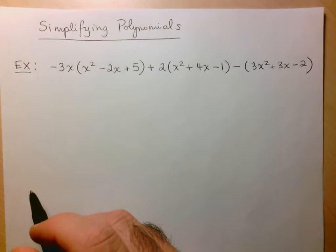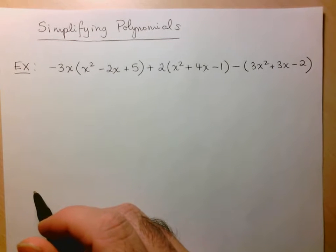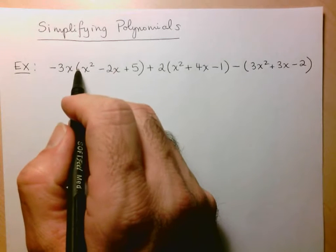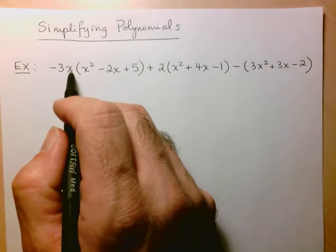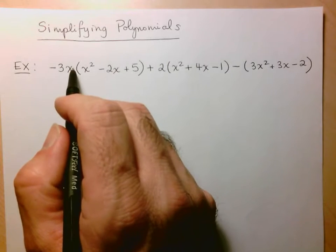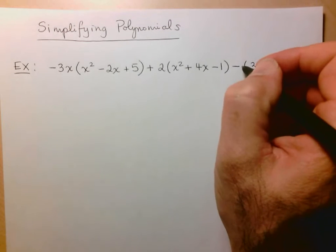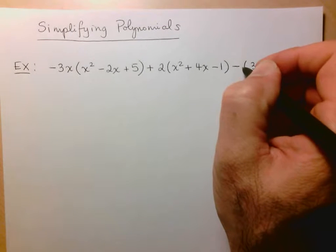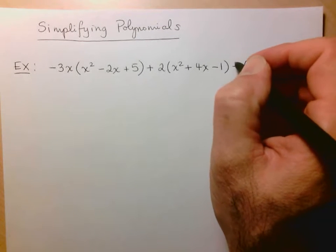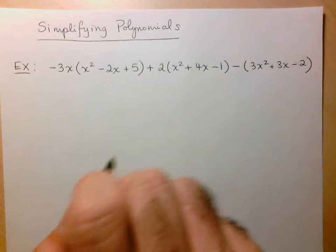As I said, we have to follow the rules of BEDMAS, so I have to take care of the multiplications first. So remember here when there's no symbol between, there's no operation between two symbols, we assume it's multiplication. So we have a multiplication here, multiplication there, and we have a multiplication here.